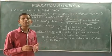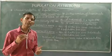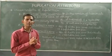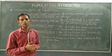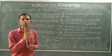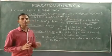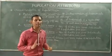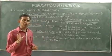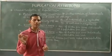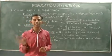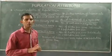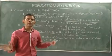These are the characteristics of the population, not of an individual. We cannot use these attributes for a single individual. For example, population density and birth rate or sex ratio or death rate — these terms are only used when we define a population, not a single individual.